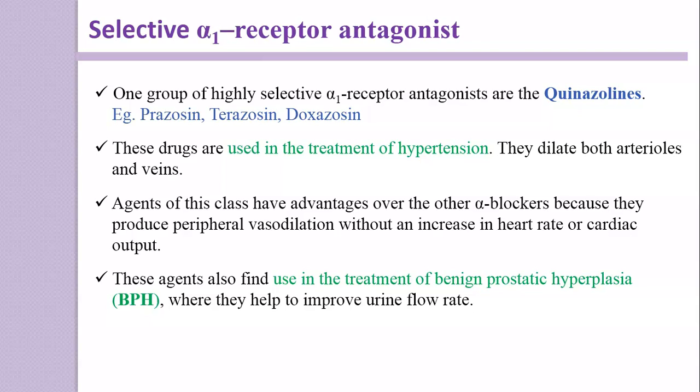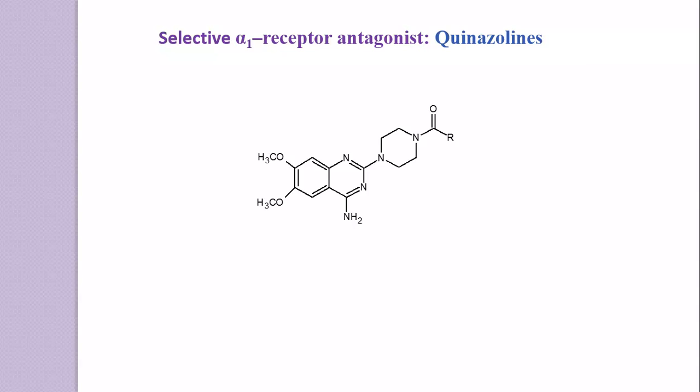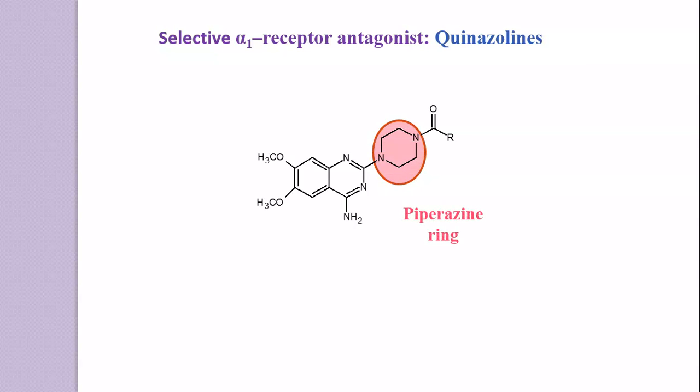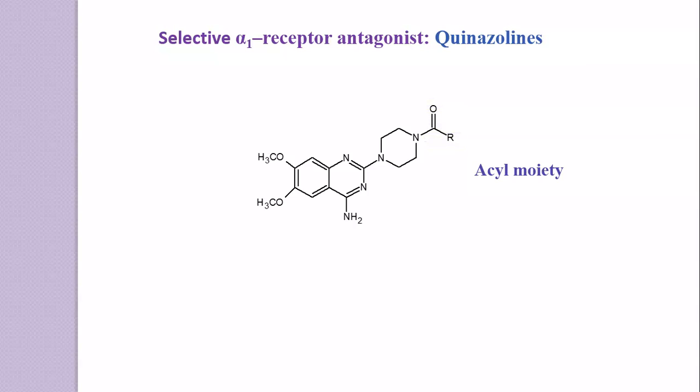Other than the antihypertensive action, these agents also find use in the treatment of benign prostatic hyperplasia, where they help to improve urine flow rate. Now, about this Selective Alpha-1 Receptor Antagonist having a Quinazoline class — the structure of this Quinazoline class has a presence of a Quinazoline ring, a piperazine ring, and a presence of an acyl moiety.